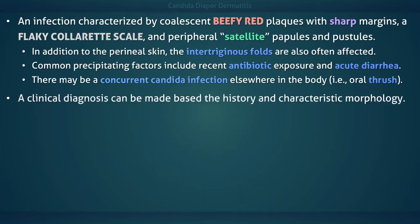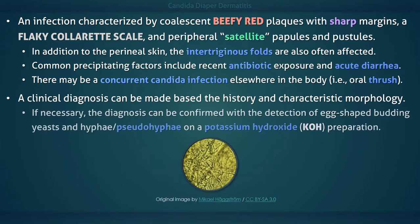The diagnosis is usually made based on the history and characteristic skin findings. Although it is not usually required, the diagnosis can be confirmed with a potassium hydroxide preparation of skin scrapings, which will show egg-shaped budding yeasts and hyphae or pseudohyphae.